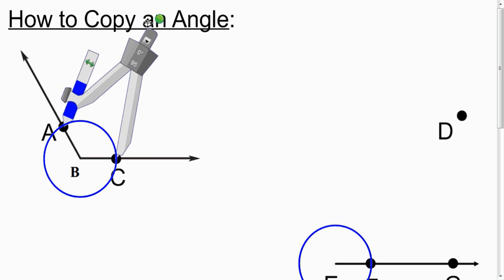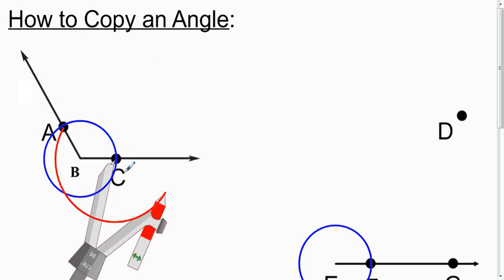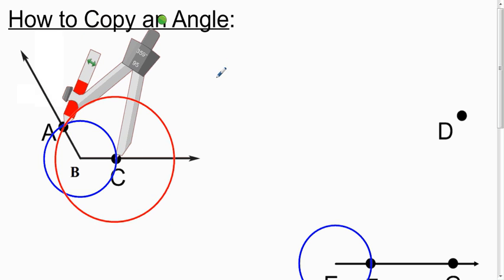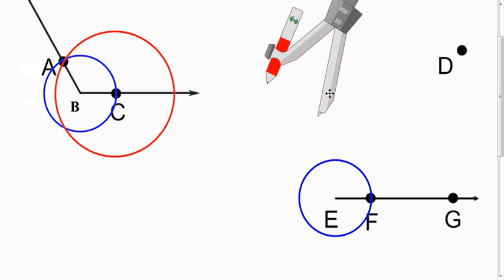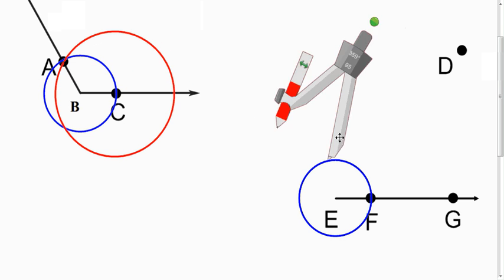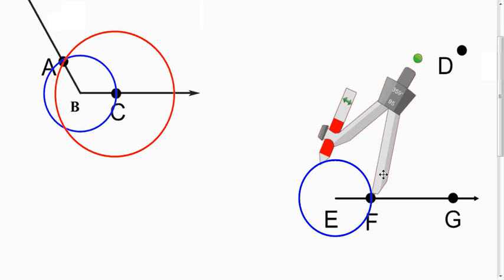This is basically just measuring how big it is. You can draw a circle there. You want to do the same thing down here, so put the pointy pivot on F and draw your circle.